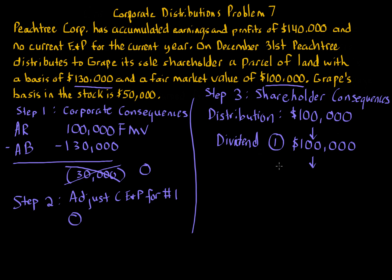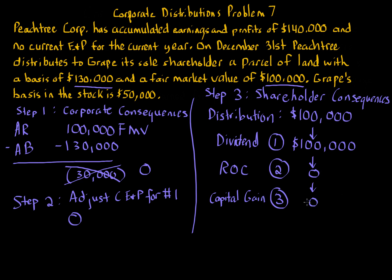Since all of the distribution is treated as a dividend, there is no return of capital — which means Grape's $50,000 basis in Peachtree Corporation stock remains $50,000 after this distribution. The last stop on the waterfall is capital gain distribution, and the result is also zero because everything was used up in the first part. Finally, the shareholder's adjusted basis in the land received: under section 301(d), basis equals fair market value — not the corporation's basis — so Grape takes a $100,000 basis in the land.